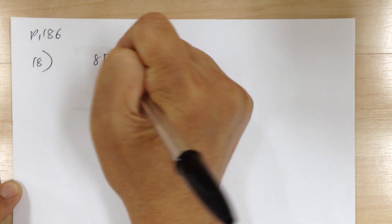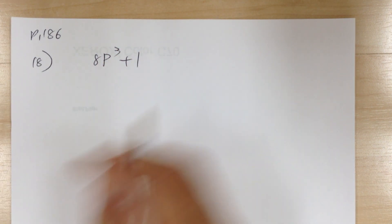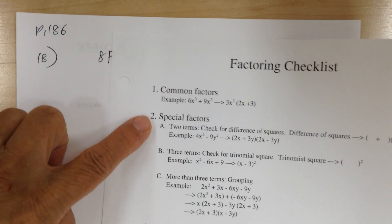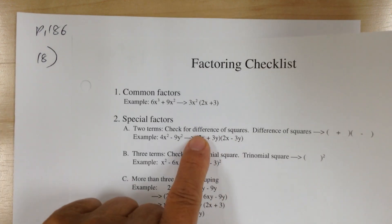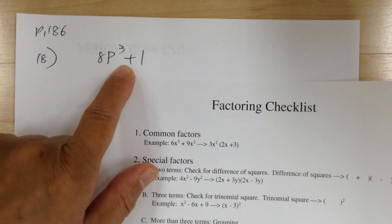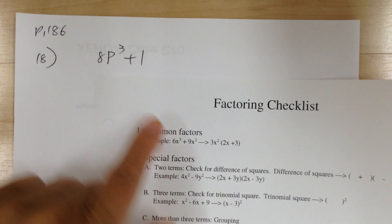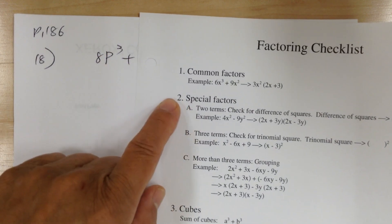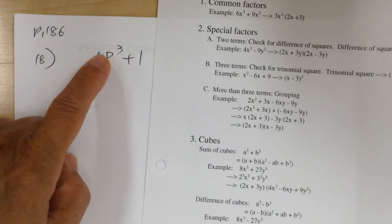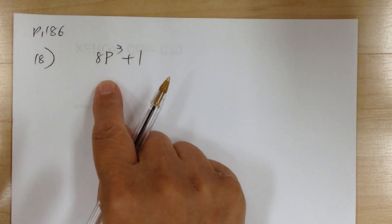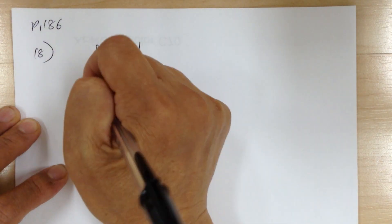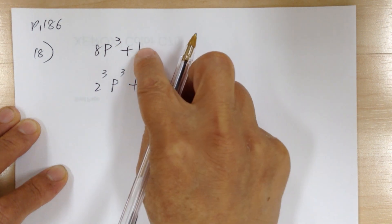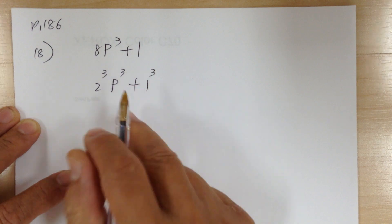Next: 8p³ + 1. Go through the checklist. Step 1, common factor — nothing. Step 2: not a difference of squares because difference means subtraction — square minus square — and this is addition, so that's not it. Step 3: the cube. This is 2³p³ + 1³. So it's a sum of cubes. For the cube, you get one smaller parenthesis and one larger one. Just get rid of the cube sign: the single-power part is (2p + 1).